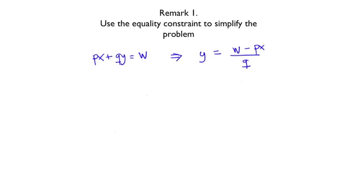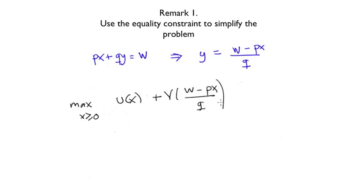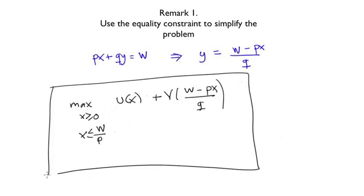Therefore, we can rewrite the problem as: maximize over x greater or equal to 0 the benefit from x plus the benefit from y, written using the expression (W minus Px) over Q. There is one extra twist: the original problem also had the constraint that y must be non-negative. This implies x must be less than or equal to W over P, because for any value of x greater than that, y becomes negative. We have transformed this complex two-dimensional problem into a simple one-variable problem with a lower bound of zero and an upper bound of W over P.